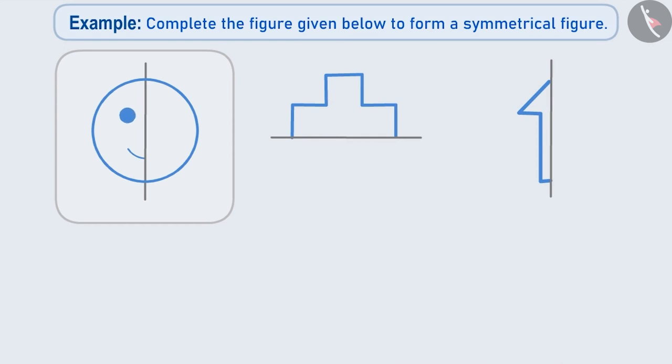Similarly, we see that there is also a small circle here. Let us also make a reflection of this. Then we will draw a reflection of this curved line. The shape has now been completed. As you can see, it is a symmetrical figure.